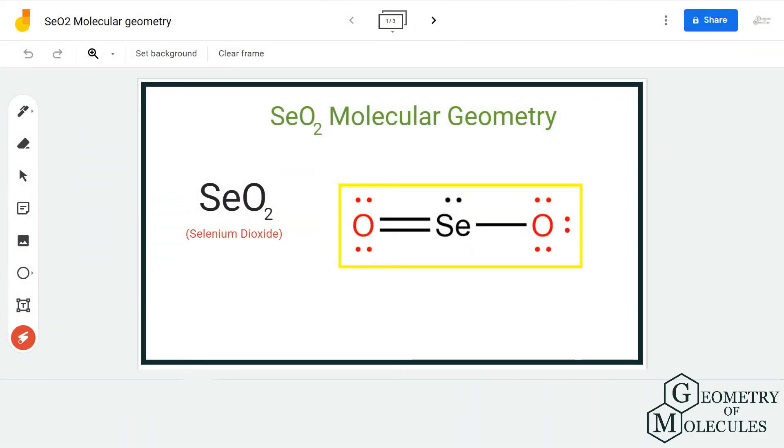Hi guys, welcome back to our channel. In today's video, we are going to help you determine the molecular geometry of SeO2. It is a chemical formula for selenium dioxide, and to understand its molecular geometry, we are first going to look at its Lewis structure.